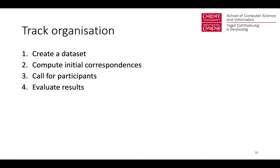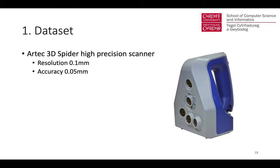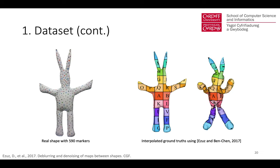This track is organized as follows: we first create a dataset and compute initial correspondences to be used consistently by methods which rely on them, then call for participants and evaluate their submitted results. The dataset was captured using an Artec 3D Spider high-precision scanner with a resolution of 0.1 millimeters and accuracy of 0.05 millimeters.